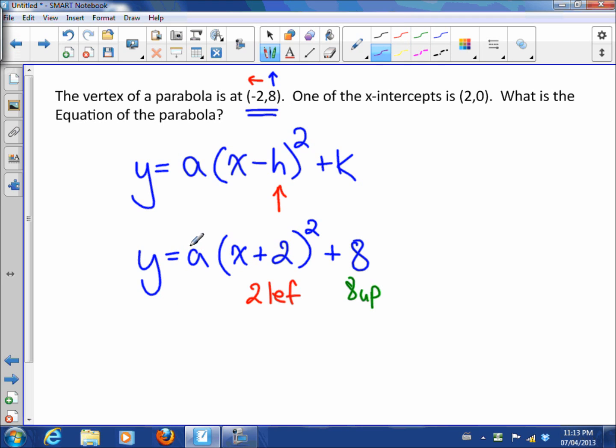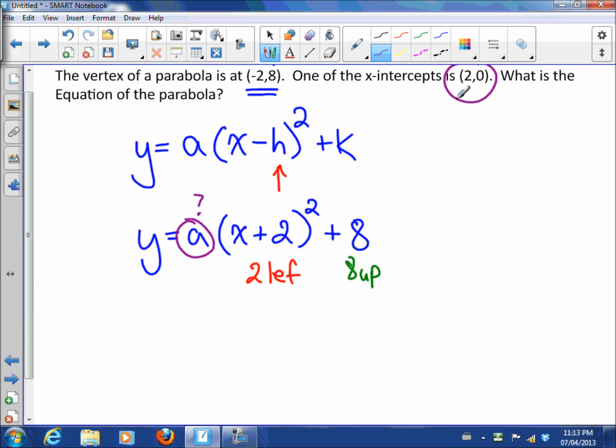So now the last part is to figure out what the a value is. Well, we know everything else except a and x and y, but I know an x and a y. So that means that all we have to do is sub in that x and y. We need to sub that in and figure out what a is.